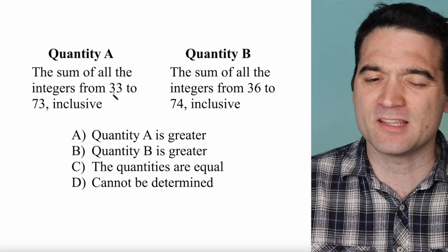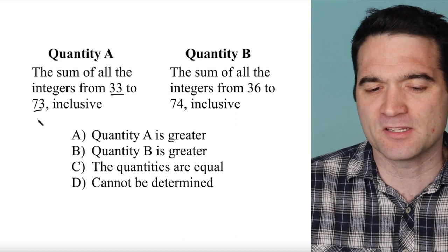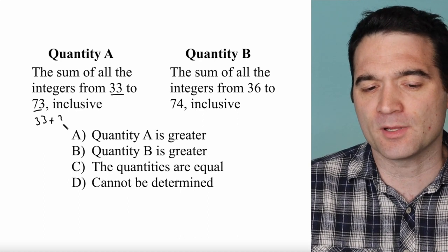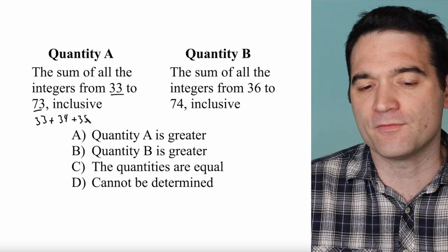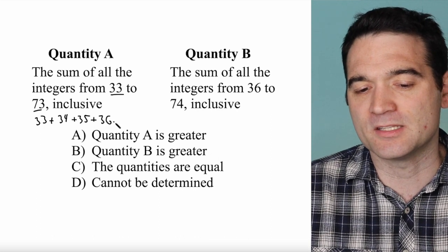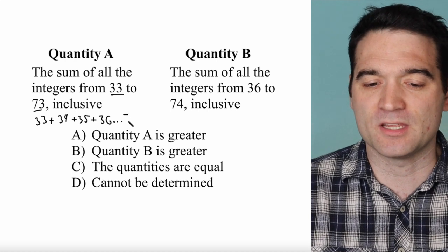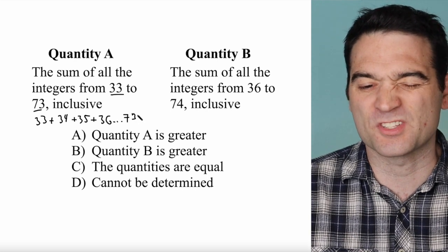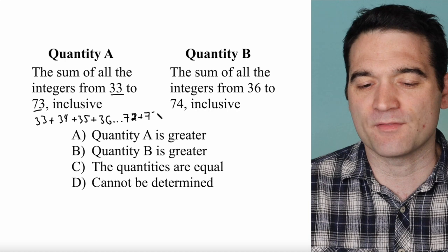What we can do is start listing these numbers out. So let's see what this is. This is 33 plus 34 plus 35 plus 36 dot dot dot plus 72 plus 73.